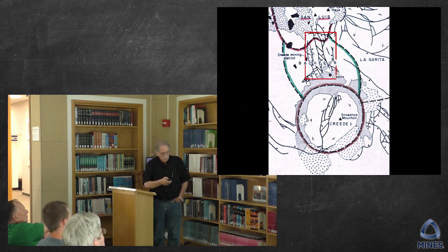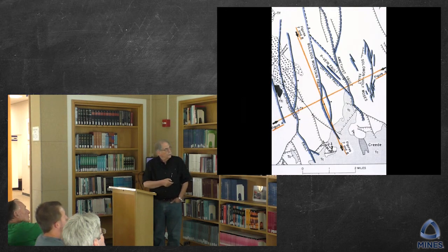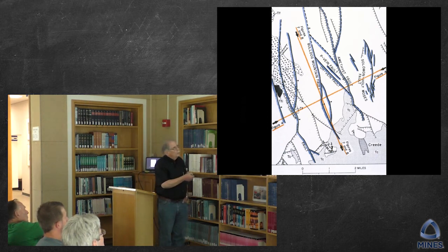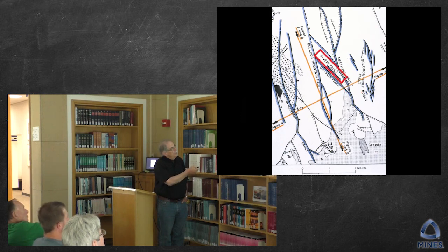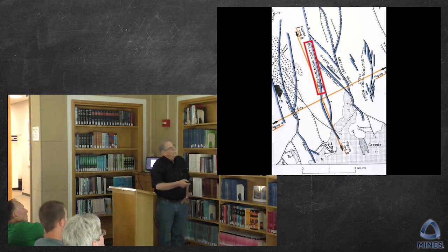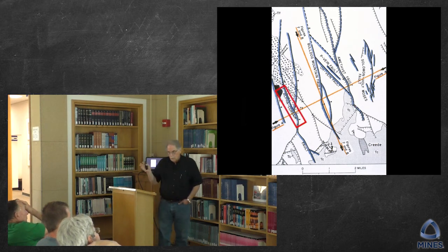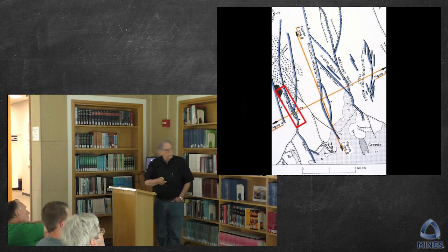This is a cross-section across the veins. The ones that are truly important for our purposes in going through the mining history are, first, the Amethyst, then the P vein, the OH vein, and the Bulldog Mountain vein — we'll talk about that next week. And we'll mention the Solomon and Holy Moses, but they're not of great significance to us this afternoon.